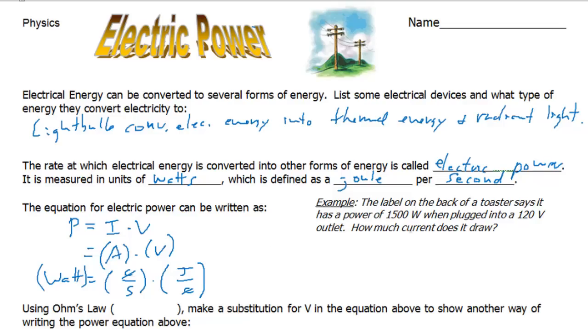Let's take a look over here at the example. The label on the back of a toaster says it has a power of 1500 watts when plugged into a 120 volt outlet. How much current does it draw? So we see power is 1500 watts. We see voltage is 120 volts. And this is asking us to calculate current.